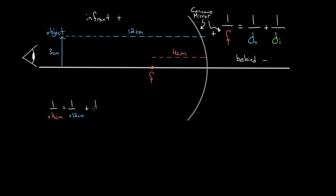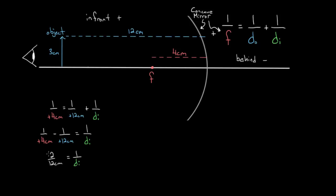Now we add one over the image distance, which we don't know — we'll solve for it. Subtracting one over 12 from both sides gives us one over four minus one over 12, which equals one over the image distance. Rewriting: three-twelfths minus one-twelfth is two-twelfths, which simplifies to one-sixth. So one over the image distance equals one-sixth. Don't forget to flip — the image distance is six centimeters, and it came out positive.